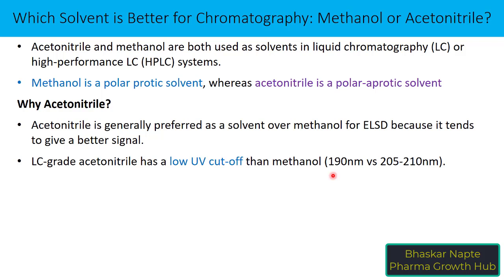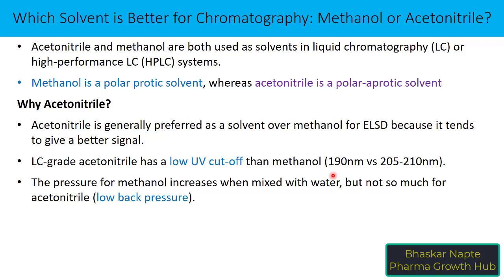If you use acetonitrile, your baseline will be flat and clean, but if you use methanol, your baseline can have noise and disturbance, which raises the detection and quantitation limits. Third, the pressure increases when methanol is mixed with water, but not so much for acetonitrile, because acetonitrile creates lower back pressure while methanol creates higher back pressure. So acetonitrile is preferred when analyzing compounds at high flow rates or when using columns with small diameter or low particle size.